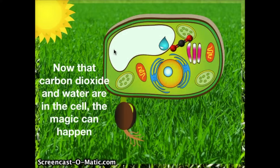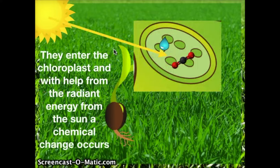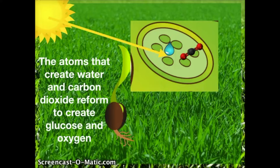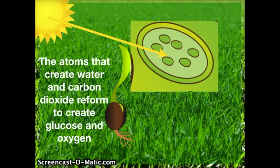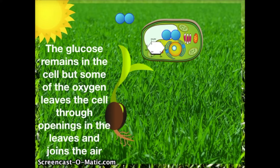Now that carbon dioxide and water are in the cell, the magic can happen. They enter the chloroplasts and with help from the radiant energy from the sun, a chemical change occurs. The atoms that create water and carbon dioxide reform and create glucose and oxygen. The glucose remains in the cell, but some of the oxygen leaves the cell through openings in the leaves and joins the air.